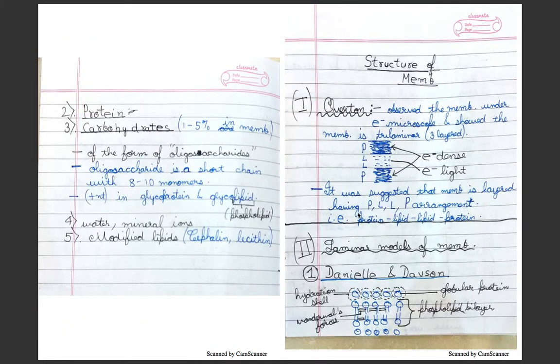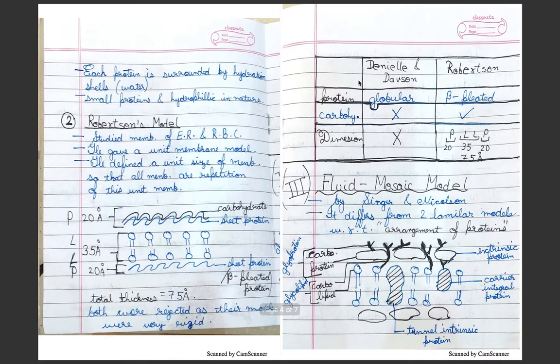Differences between Danielli-Davson and Robertson: Danielli-Davson showed that they had globular protein and Robertson showed that they had beta-pleated protein, that is sheet protein. Danielli-Davson did not have any carbohydrate in their model, but Robertson had carbohydrate in the model. Dimensions were not mentioned in Danielli-Davson, and Robertson told it was 75 angstroms long.